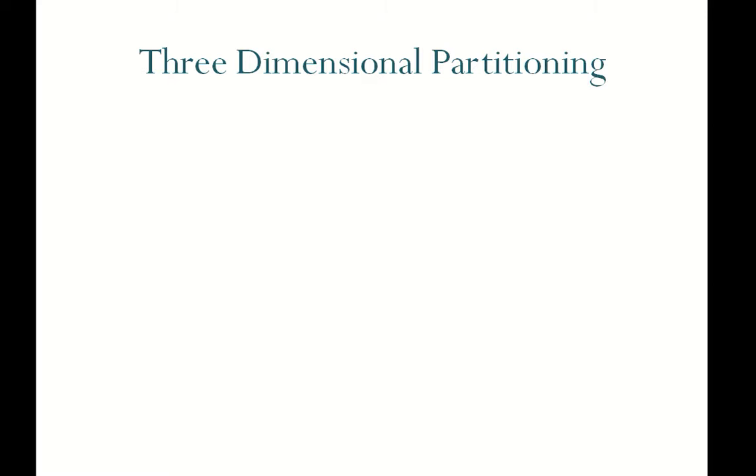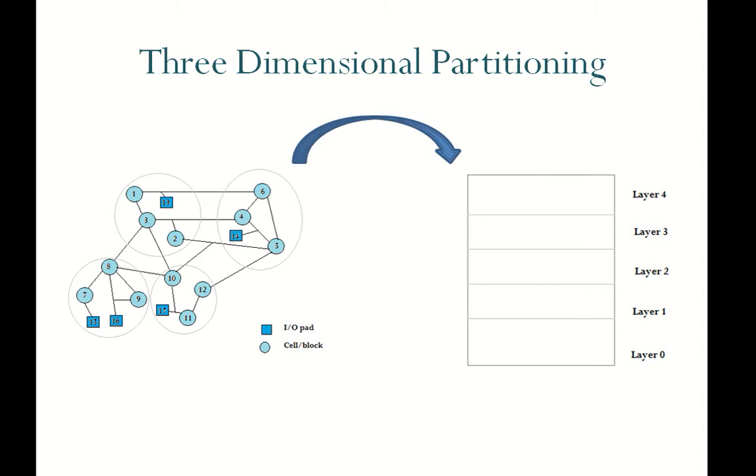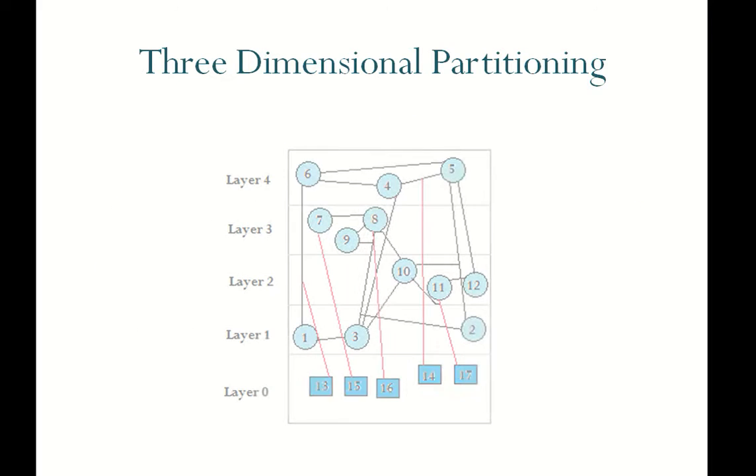Let us assume, we assign 1, 2, 3 to Layer 1, 10, 11, 12 to Layer 2, 7, 8, 9 to Layer 3, 4, 5, 6 to Layer 4. Layer 0 is reserved for all IOPads. As shown in the diagram, we just assign all subparts to the different layers one by one without changing the connection among the elements.